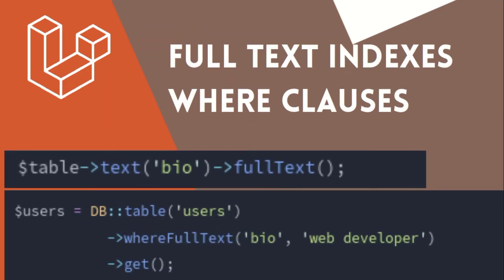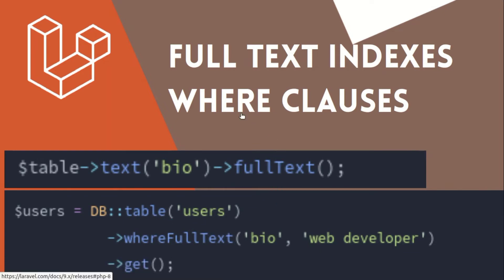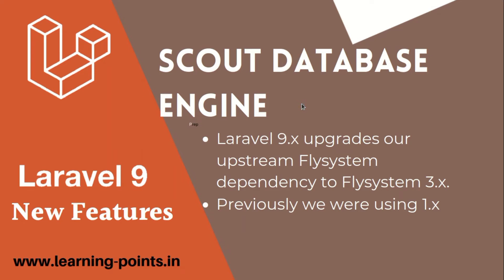The next thing is the full text index and where clause. A new full text option is available when creating database columns — you can mark a column as full text in your migration file, which generates a full text index. For example, a column named 'bio' can have full text specified. In queries, there is now a whereFullText option instead of the regular where clause to search full text content.